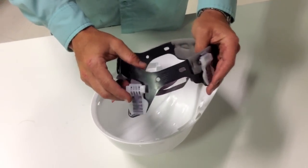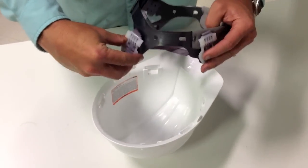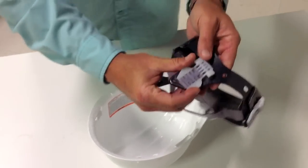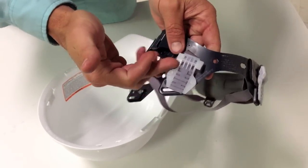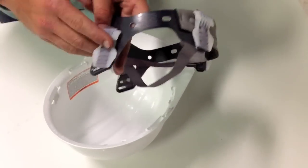And then you've got these four tabs. You want these four tabs with the narrower portion facing up on this particular helmet.